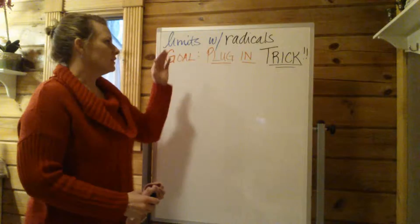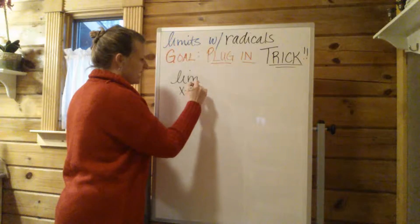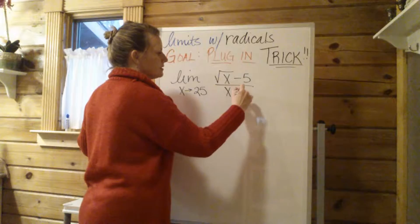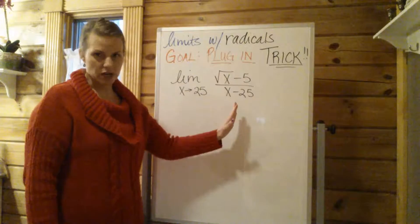So again, we have limits. Our goal is always just to plug the number in for x. So let's say the limit as x approaches 25, and then the expression is going to be something like the square root of x minus 5 over x minus 25. It might look a little funky, but you're probably going to see something like this along the way.